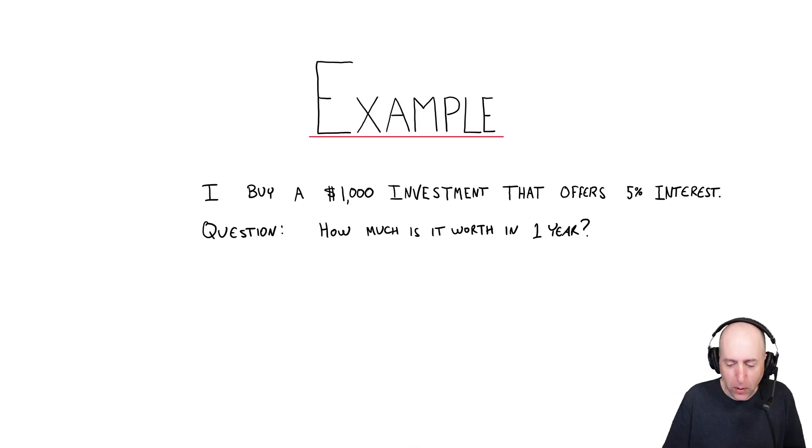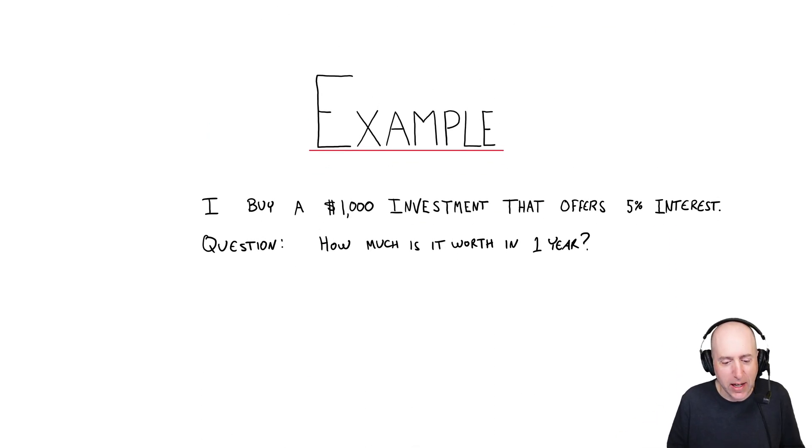So a simple example to kind of get us started and get us thinking about this, I buy a $1,000 investment that offers 5% annual interest. Whenever you're quoted interest, it doesn't say annual or when you assume annual. Question, how much is it worth in a year? So your intuition and my intuition here should be pretty much right. It's a $1,000 investment. It offers 5% interest. That means it's $50 in interest. A thousand times 5% is 50.